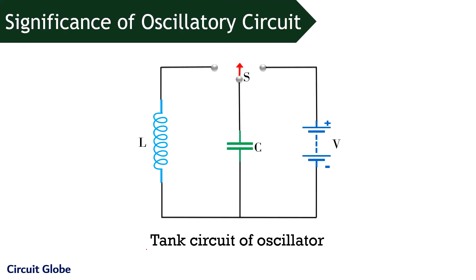Now, let us check the significance of oscillatory circuit. This figure shown here is the tank circuit of oscillator consisting an inductor, capacitor along with a switch and battery. In the open condition of the switch like the one shown here, no flow of current takes place through any part of the circuit because the circuit is incomplete.